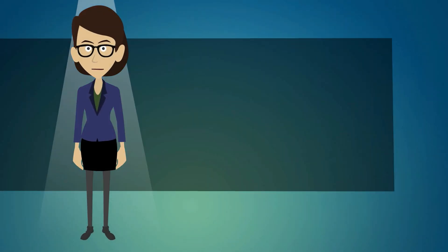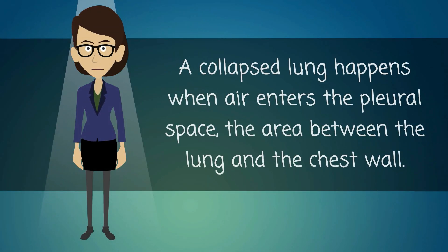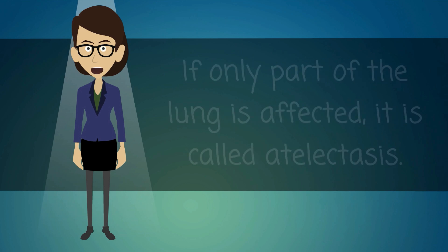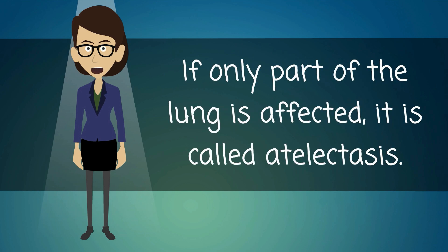A collapsed lung happens when air enters the pleural space, the area between the lung and the chest wall. If it is a total collapse, it is called pneumothorax. If only part of the lung is affected, it is called atelectasis.